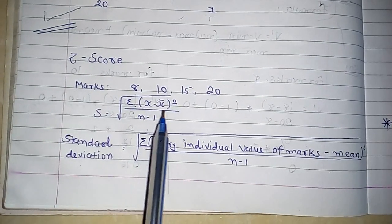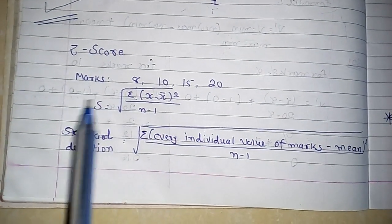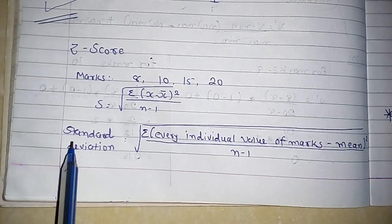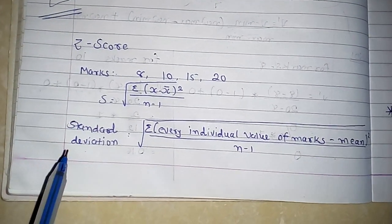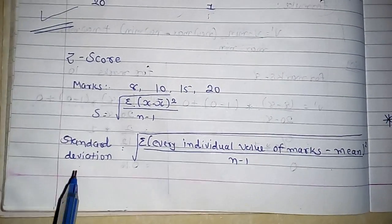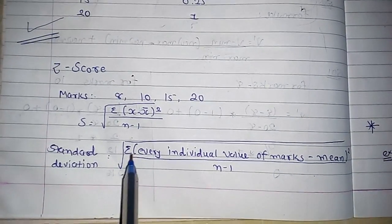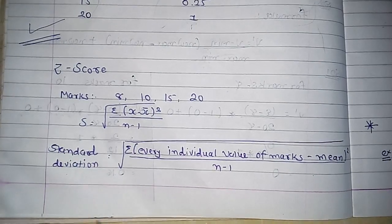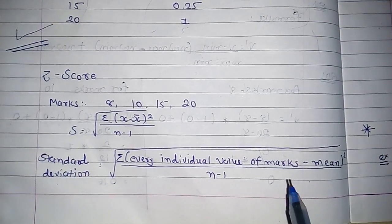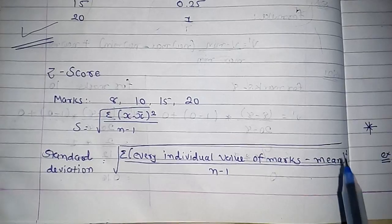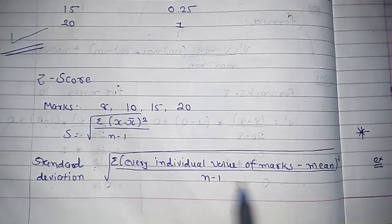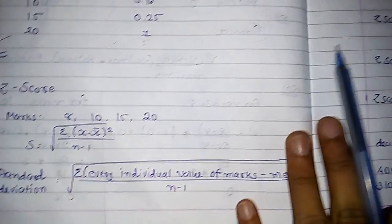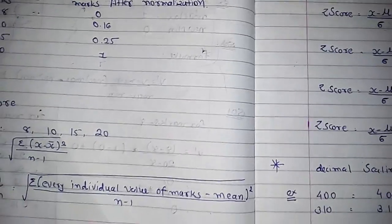The first formula is: s squared equals sigma (x minus x-bar) whole square upon n minus 1. From that you also have to find out the standard deviation. Standard deviation is equal to the square root of sigma of each individual value of marks minus the mean, whole square, divided by n minus 1.